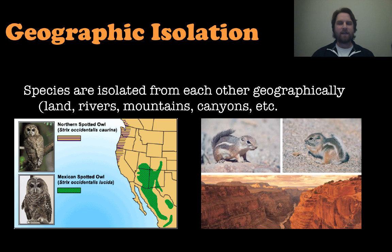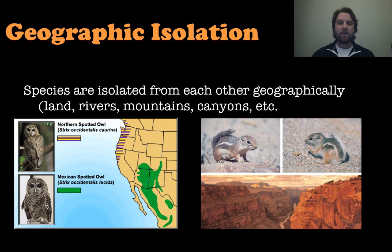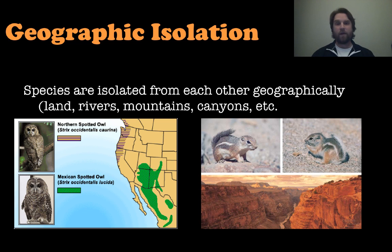The final type is geographic isolation — the species are isolated from each other geographically and cannot get to one another. Usually there's a large amount of land, a river, or a mountain range between them. On the right-hand side, two different chipmunk-like creatures are separated by the Grand Canyon and cannot get to each other — that is geographic isolation.